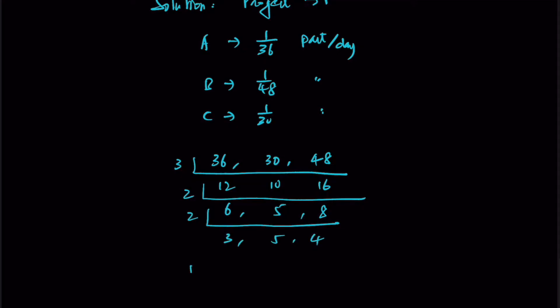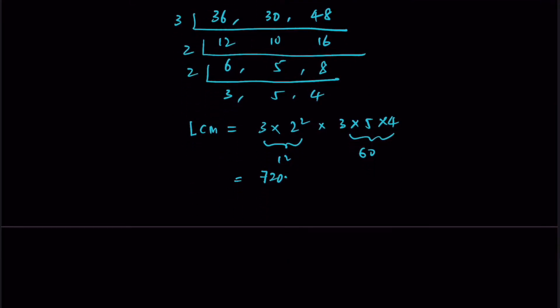The lowest common multiple is 3 × 2² × 3 × 5 × 4, which gives us 720. So I let A be the number of days to complete the project.